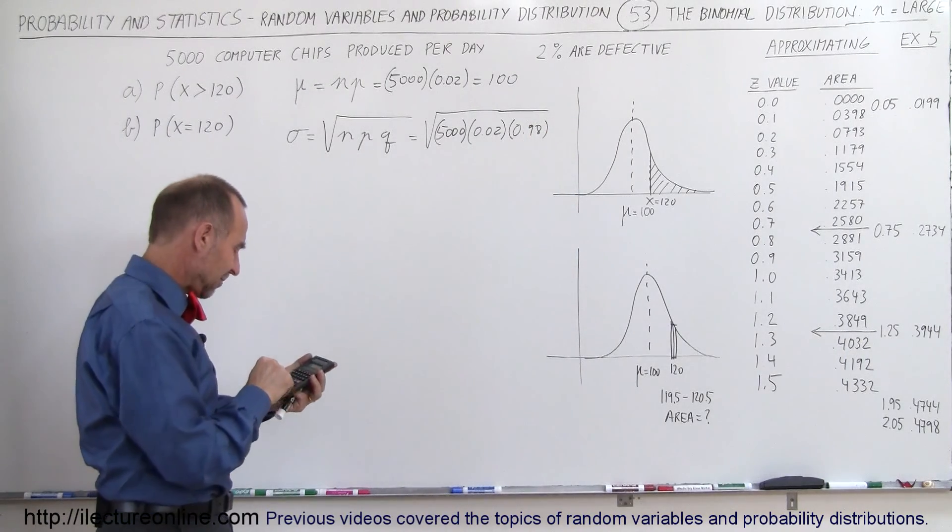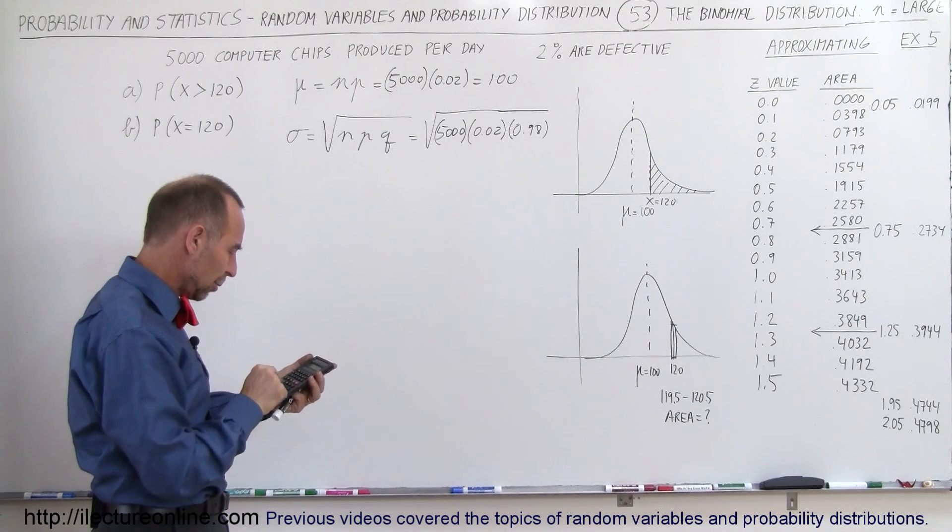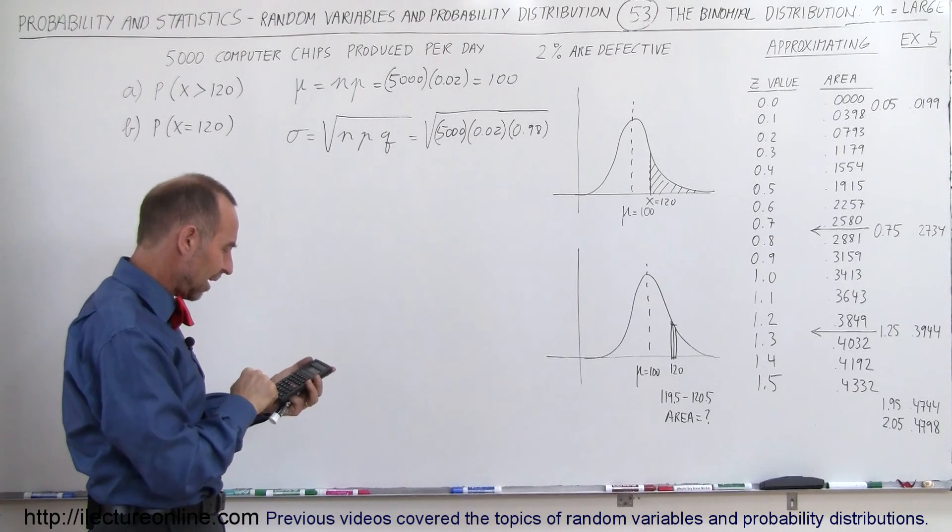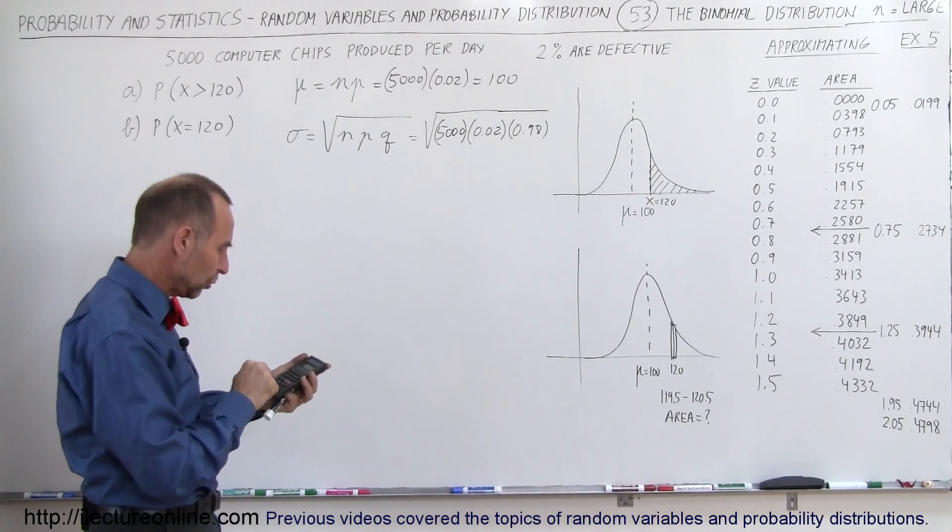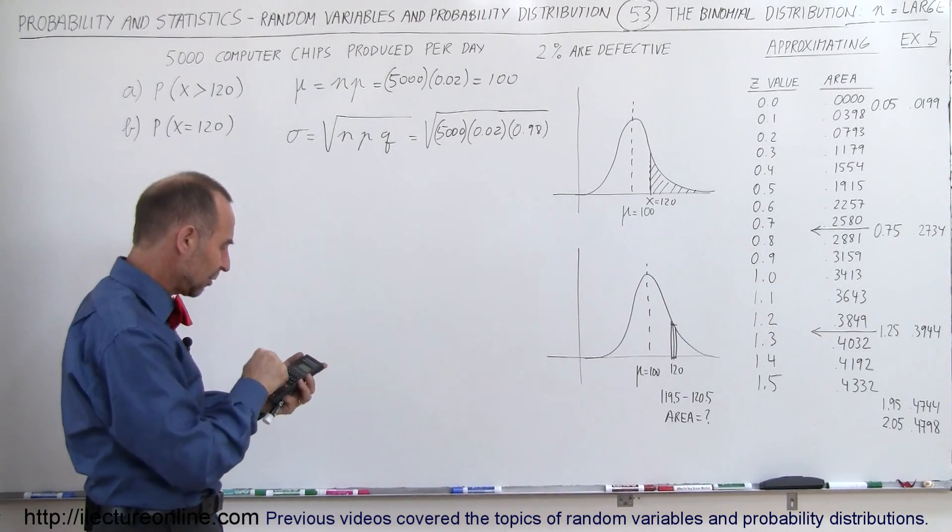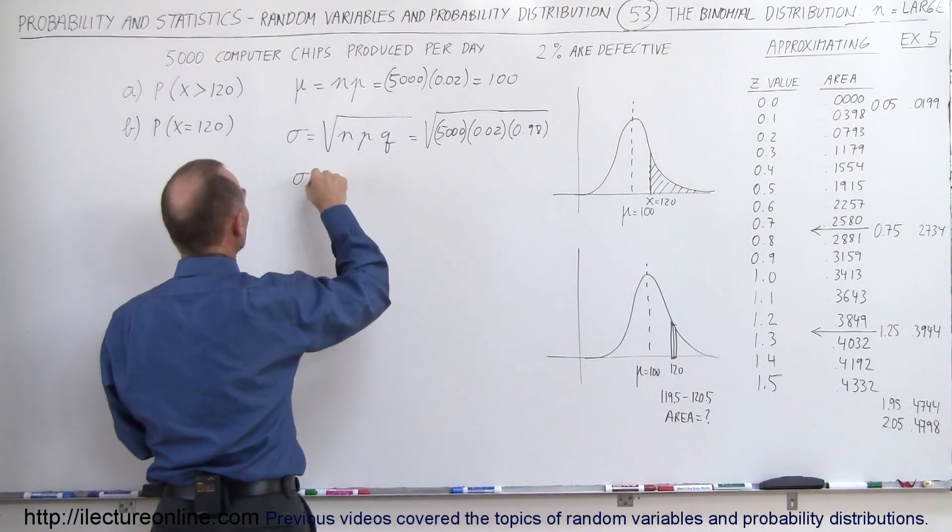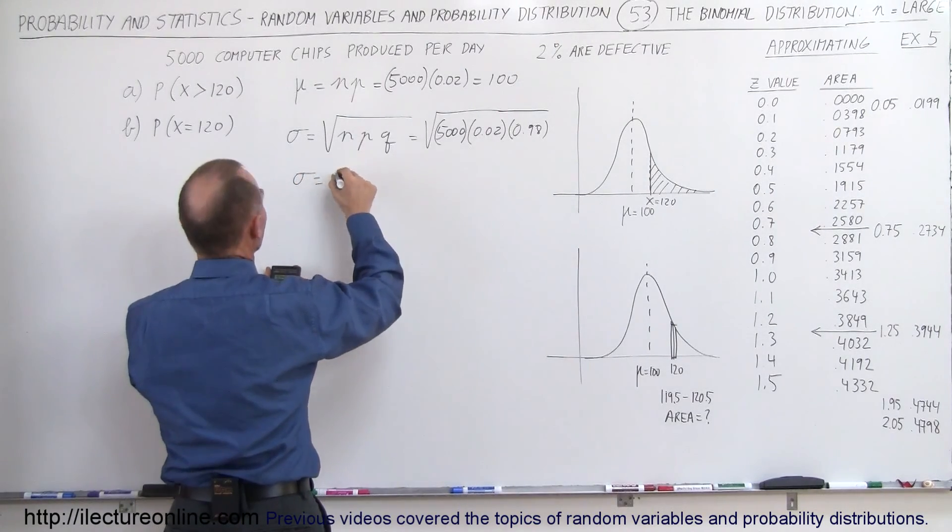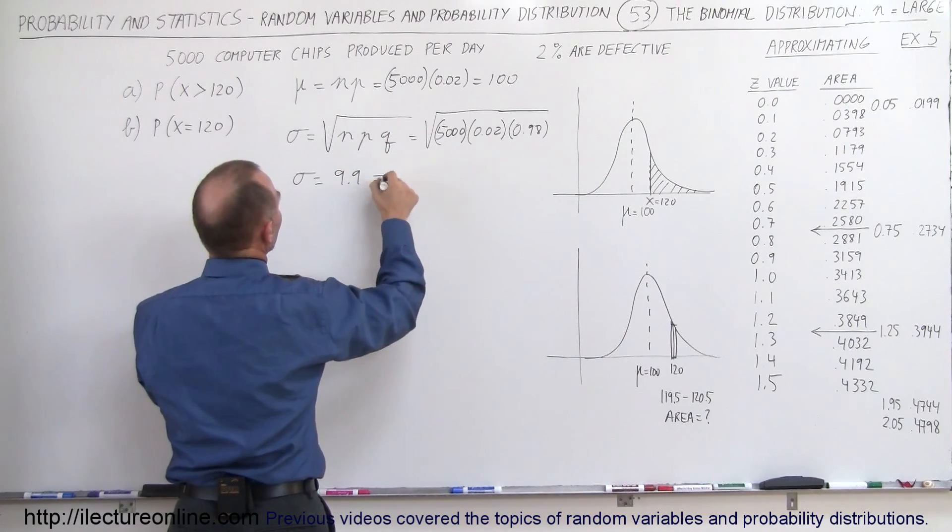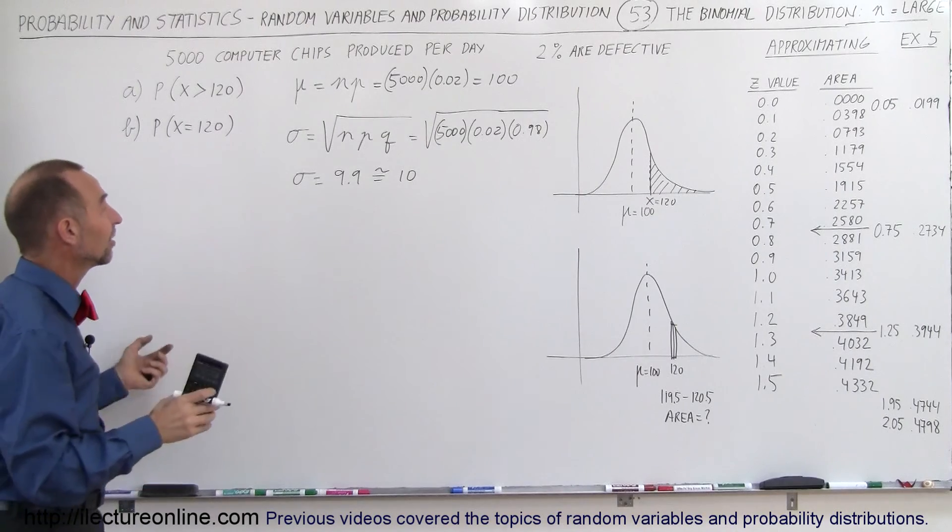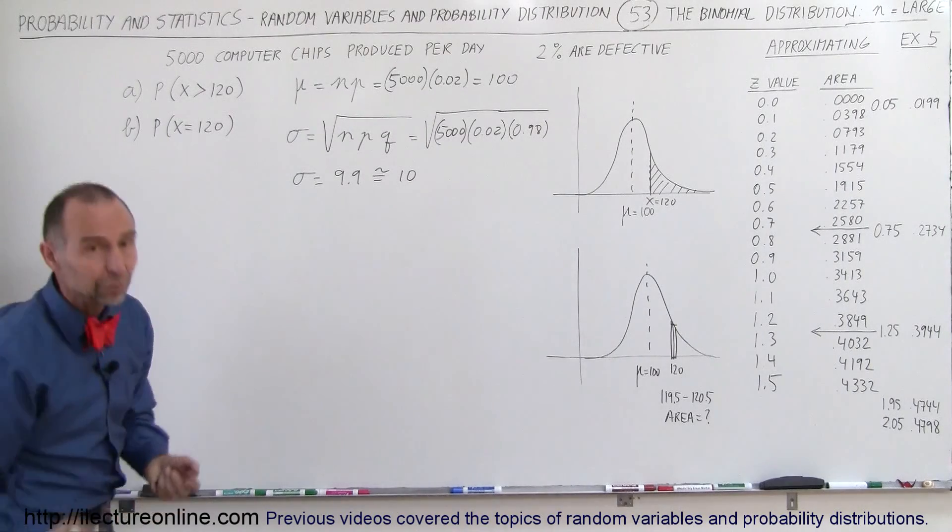So we get 5,000 times 0.02 times 0.98, and take the square root of that, and we get the standard deviation is equal to 9.9. So let's say that's approximately equal to 10 to make things a little bit easier for us to work with.